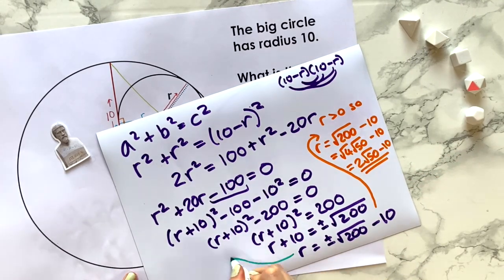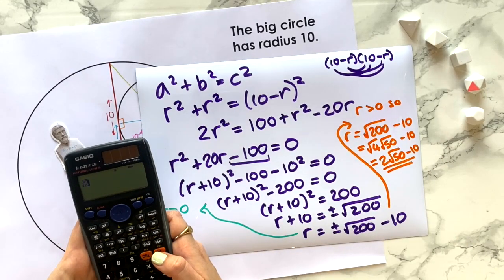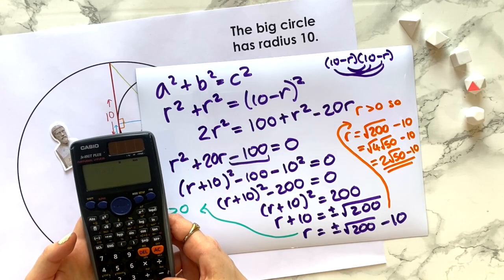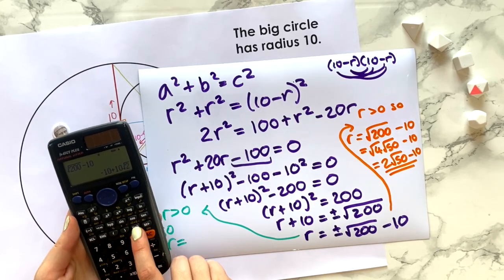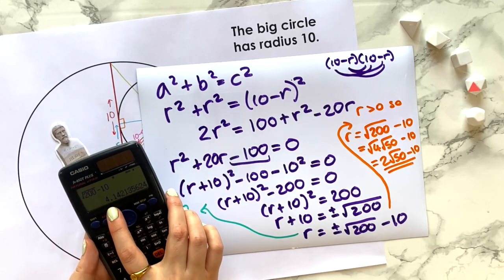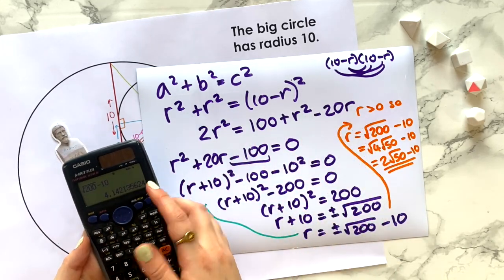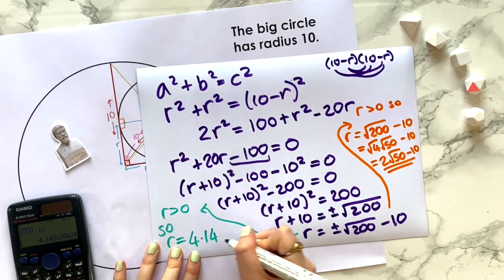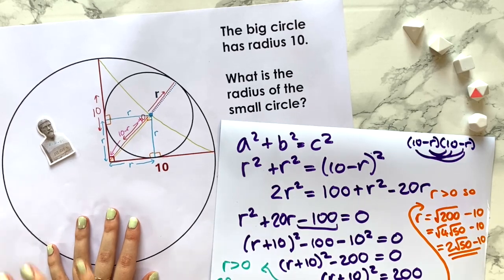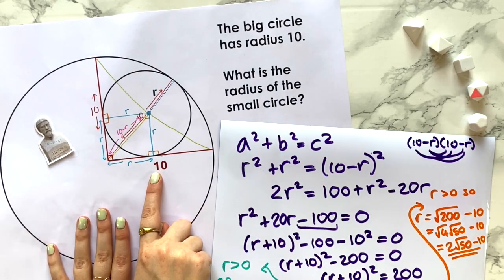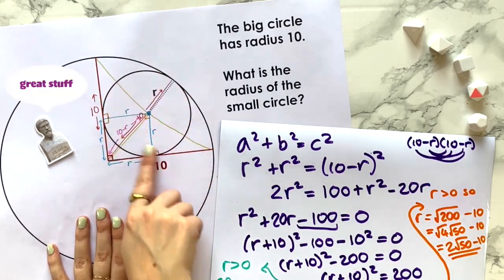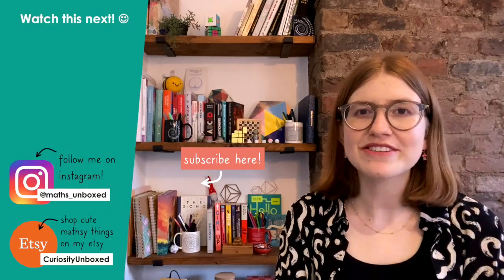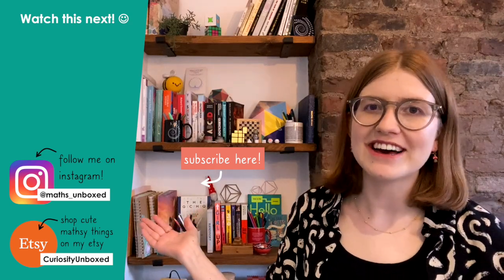Or if you have a calculator, we have √200 - 10 like that, and pressing equals—and if I press this button here, it will give me the decimal version—so I get 4.142 and so on. Say I need to give it to two decimal places, that's going to be 4.14. So there we have our answer. Just from a simple diagram that only had one number labeled on it, we have managed to work out what the radius of that smaller circle was. Thanks for watching. I hope you enjoyed this video. If you want to see more aesthetic maths videos, do check out my channel and subscribe.